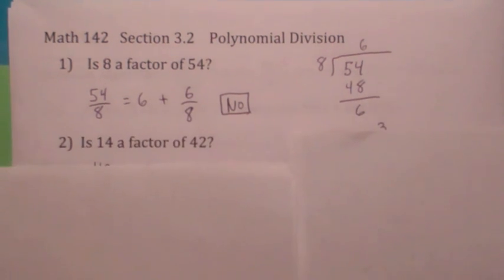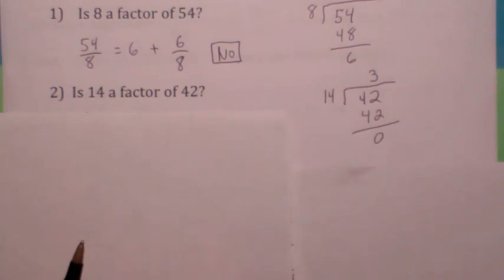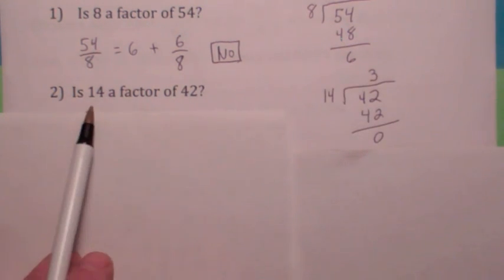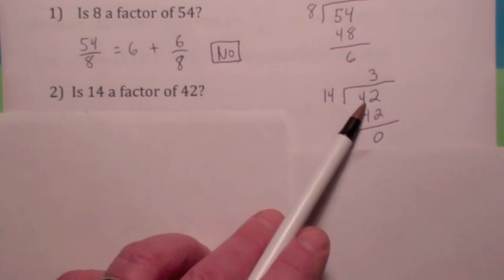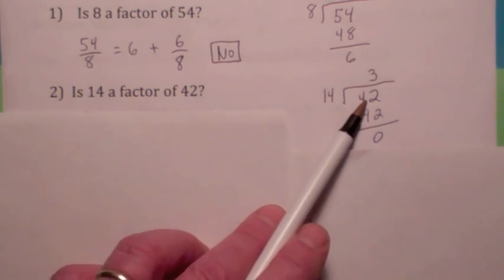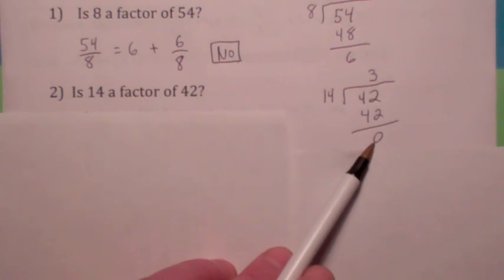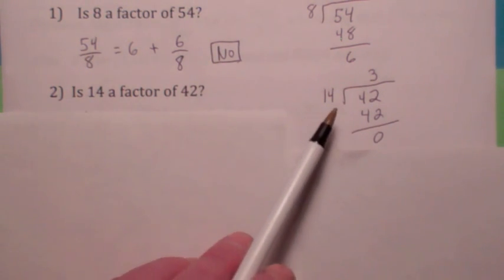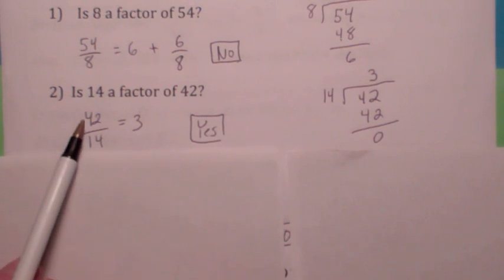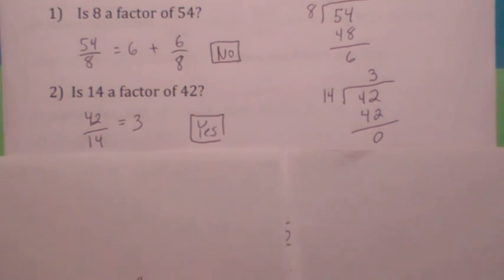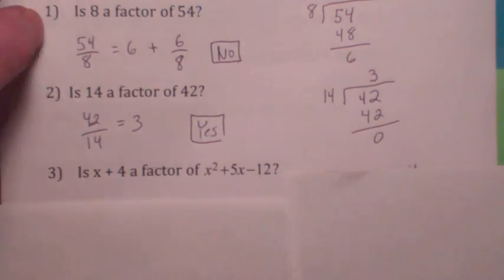How about this? Is 14 a factor of 42? When you divide 42 by 14 — by the way, 42 is called the dividend, 14 is called the divisor, the result is called the quotient, and what's left over is called the remainder. It turns out it goes in evenly, so the answer is yes, it's a factor. When you divide 42 by 14 you get 3 with no remainder. So something's a factor if the remainder is 0.